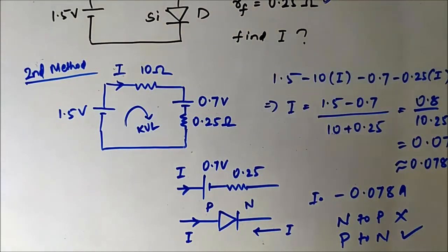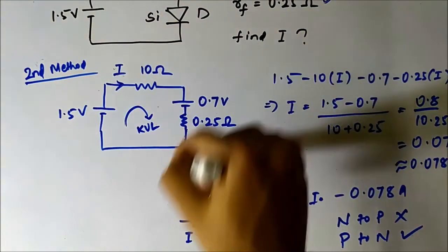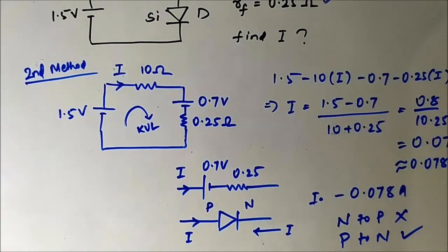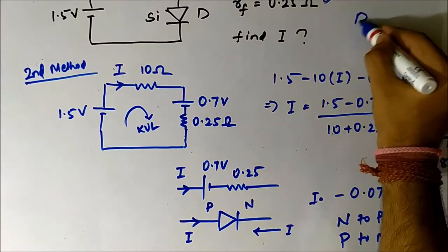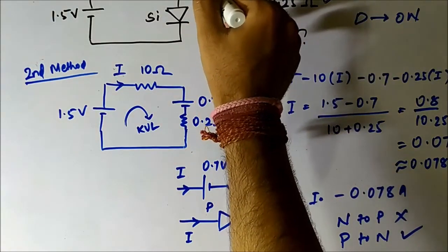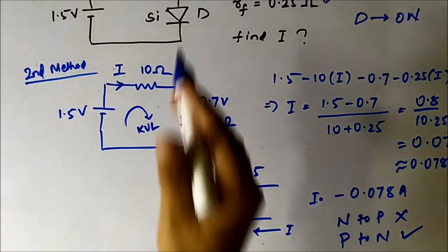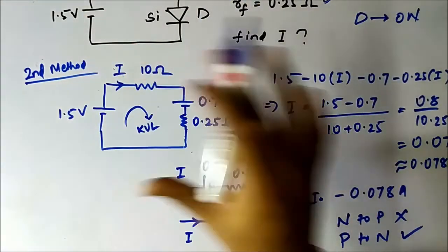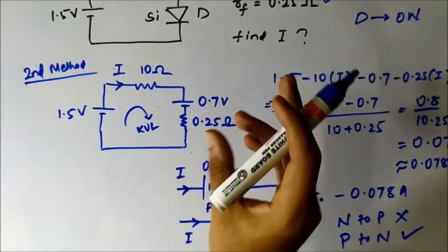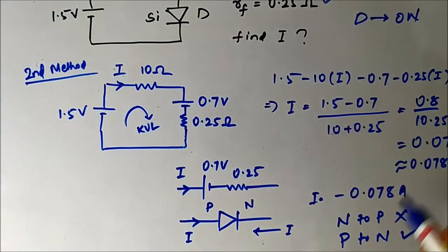In both methods we obtain the same result: the diode is on. In the second method we also directly get the answer to the question — the value of current i is 0.078 ampere. The current flowing through the diode is 0.078 ampere.